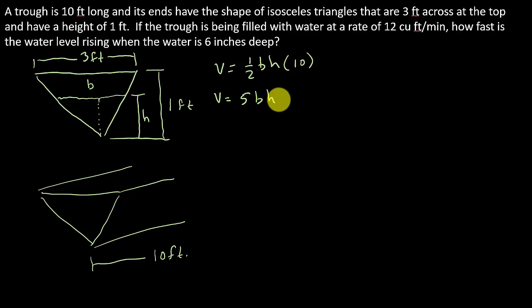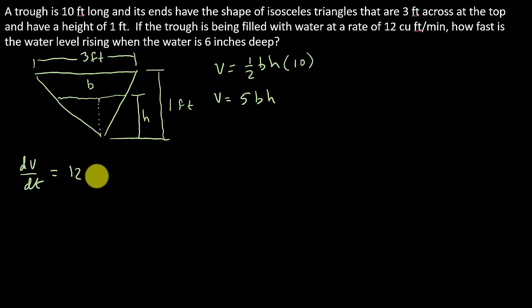All right, so let's look and see what other information they give us. Let's write down what they give us and what they want us to find. Well, it's being filled with water at 12 cubic feet per minute. So that's the change in volume. So I know dV/dt = 12 cubic feet per minute.